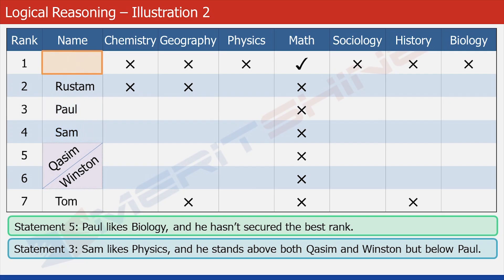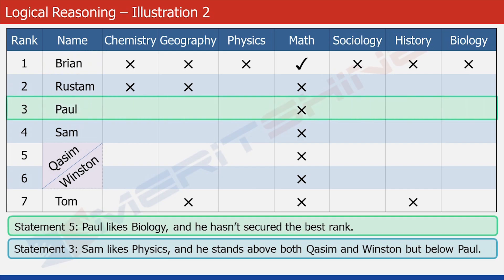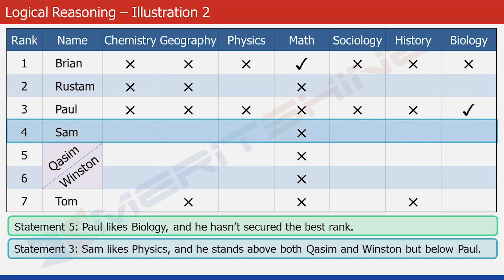Now look at the highlighted cell. Since there is just one name left to be filled in the first column, which is Brian, he should be rank one and so we put his name here. Now look at statement five once again, which says that Paul likes biology. We put a check against biology and a cross against the rest of the subjects in Paul's row. Similarly, using statement three, which says that Sam likes physics, we put a check against physics and a cross against the rest of the subjects in Sam's row.